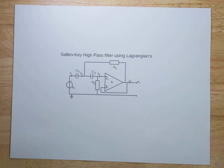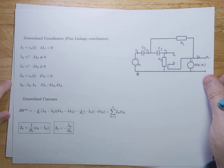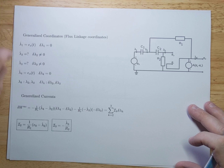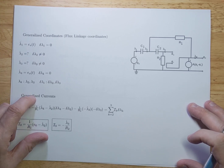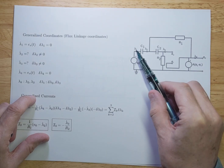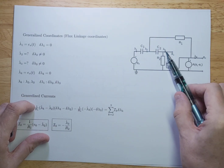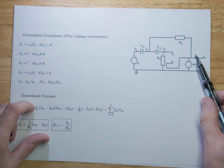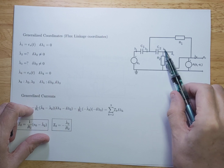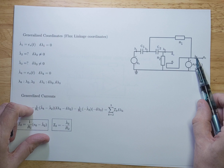Let's start with defining the generalized coordinates. The generalized coordinates — and we're going to focus on the flux linkage coordinates — are essentially four possible opportunities: lambda 1, lambda 2, lambda 3, and lambda 4. Now only lambda 2 and lambda 3 can be varied at will, so those are the generalized coordinates, and lambda 1 and lambda 4 are not.